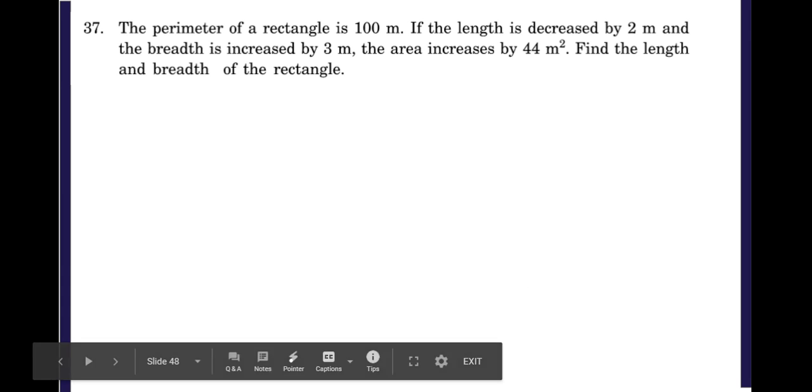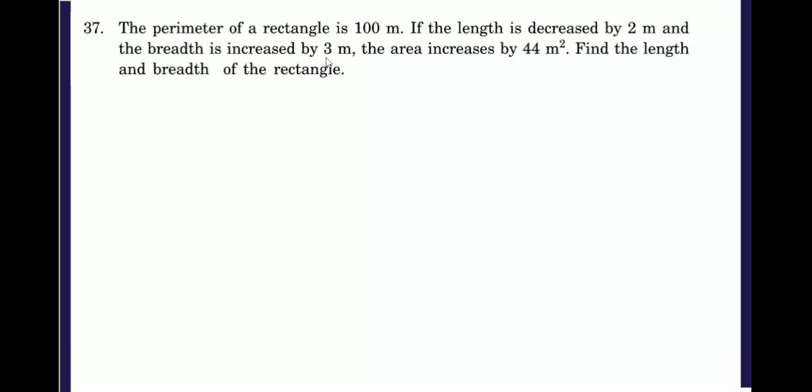Let us discuss this question. The perimeter of a rectangle is 100 meters. If the length is decreased by 2 meters and the breadth is increased by 3 meters, the area increases by 44 square meters. Find the length and breadth of the rectangle.